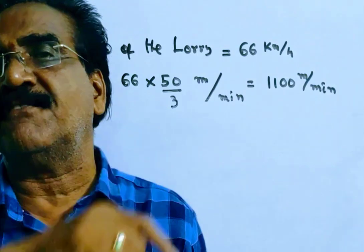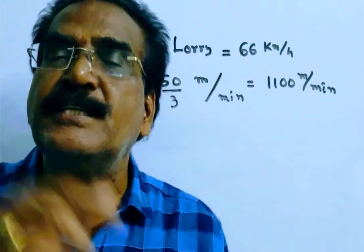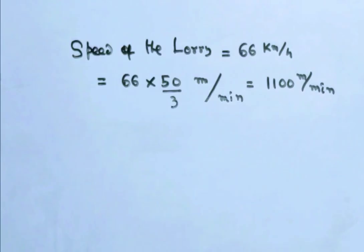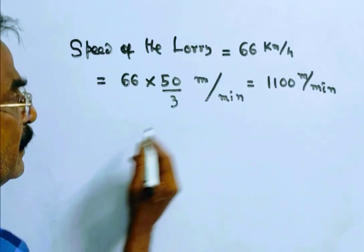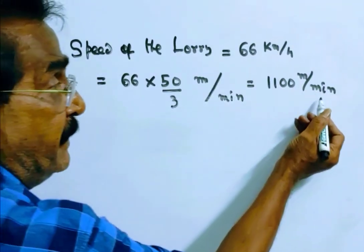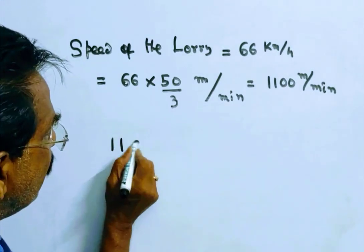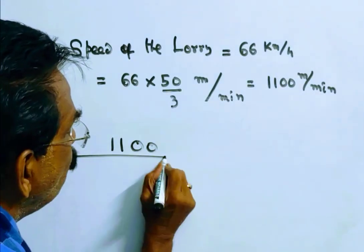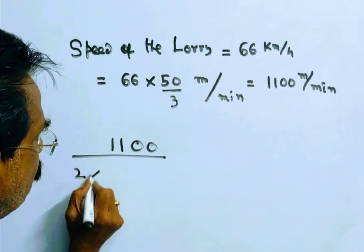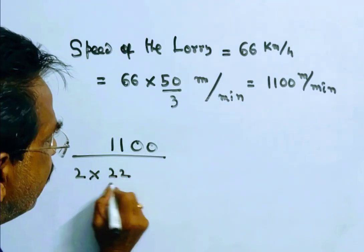Number of revolutions is equal to, number of revolutions in 1 minute is equal to distance by 2πr.